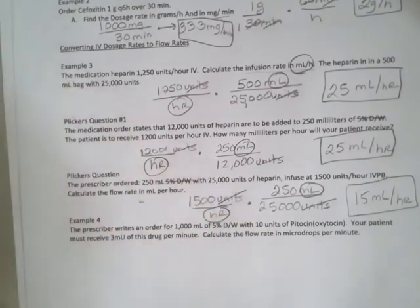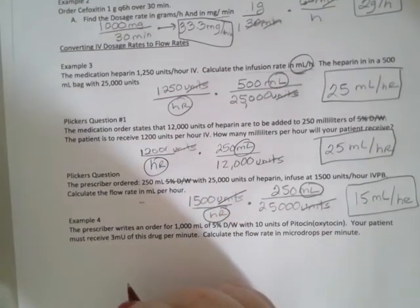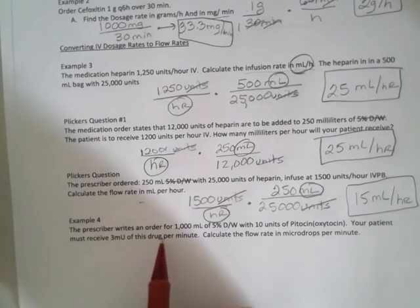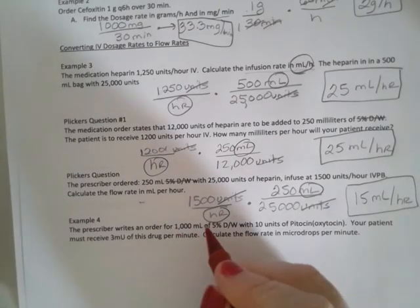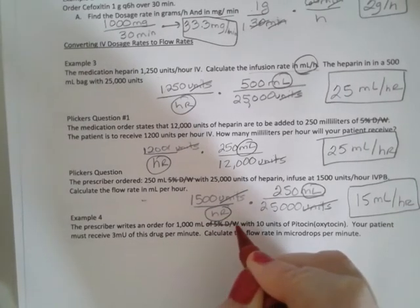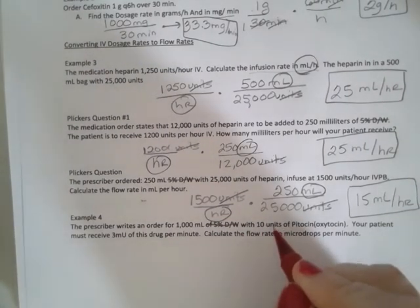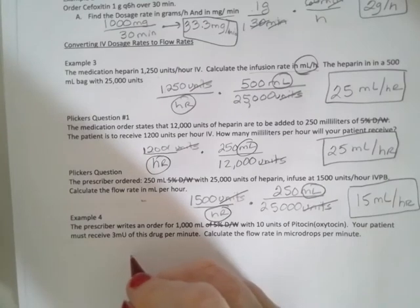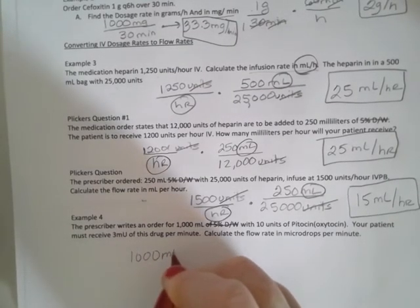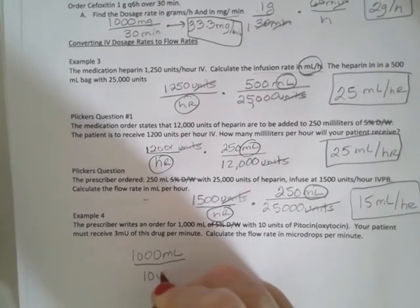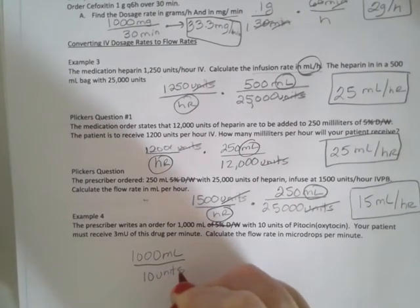And in example four, it says the prescriber writes an order for 1,000 mLs 5% D5W. Again, I don't care about that. It has 10 units of Pitocin in it. So I start off with 1,000 mLs with 10 units of Pitocin.